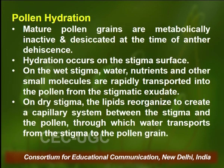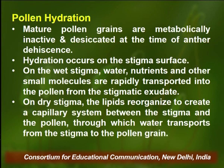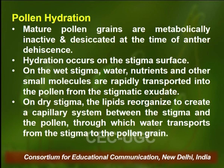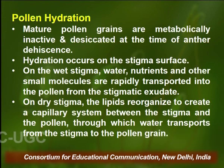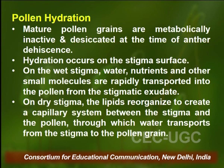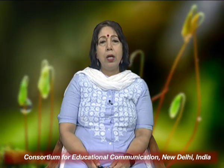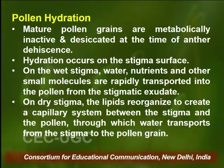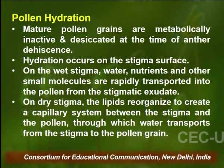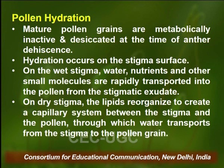Mature pollen grains are metabolically inactive and desiccated at the time of anthesis. They have to be hydrated, and this hydration occurs on the surface of the stigma. On wet stigma, water, nutrients and other small molecules are rapidly transported into the pollen through the stigmatic exudate. But on a dry stigma, the lipids reorganize to create a capillary system between the stigma and the pollen through which water is transported from the stigma to the pollen grain.